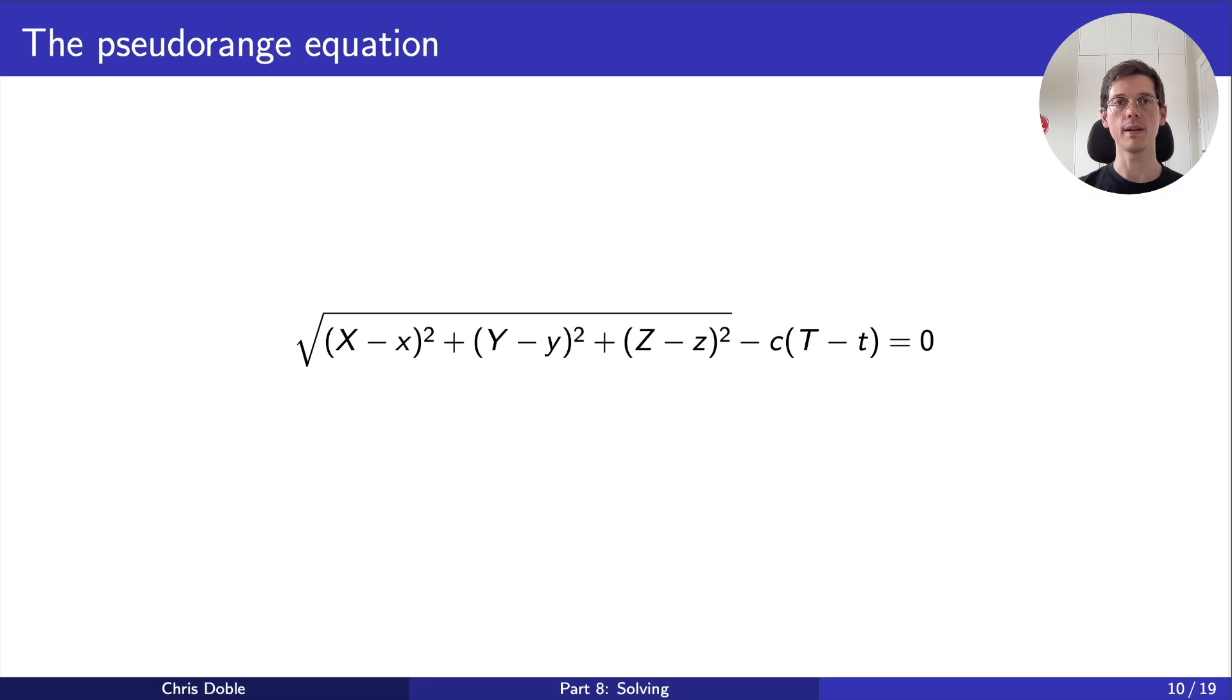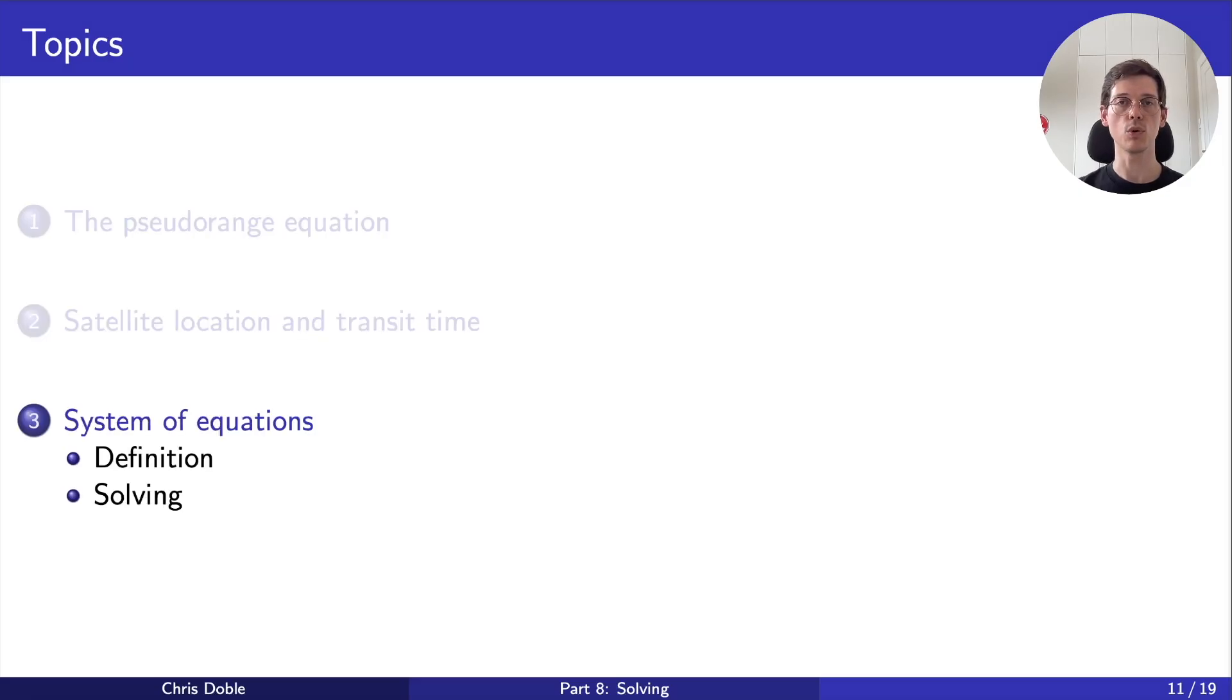Okay, let's revisit the pseudorange equation. We now know the values of capital X, Y, Z, and T, so can we solve this? Well, no. There are four unknowns but only one equation. What we need is a system of equations. But how would we define such a system? Where are we going to get three other equations?